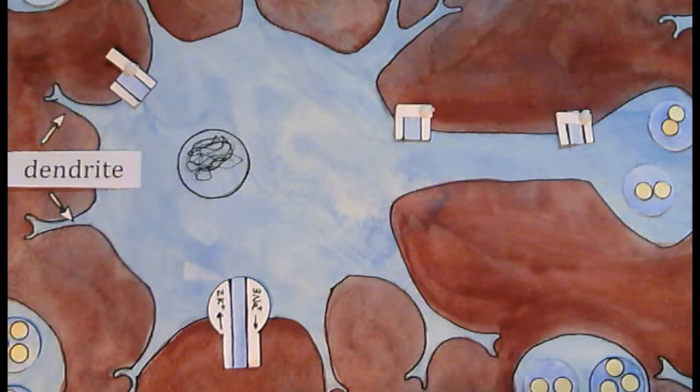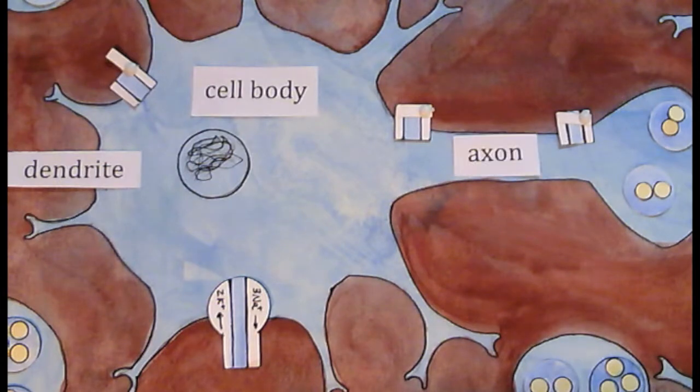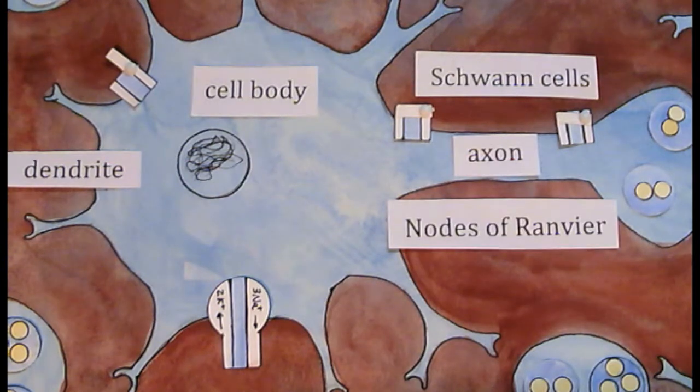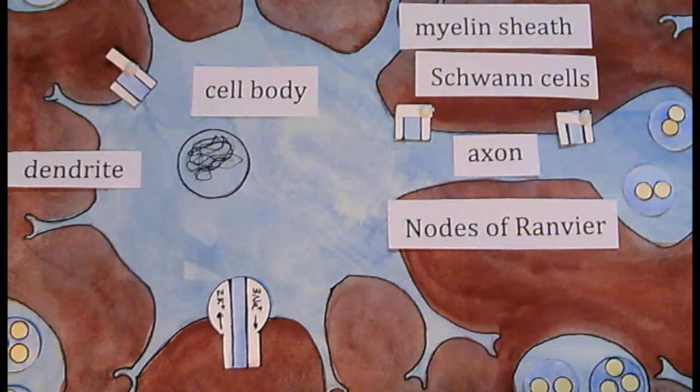These are dendrites. This is the cell body. This is the axon, which is made of Schwann cells, in between which are nodes of Ranvier. A myelin sheath covers the Schwann cells of the axon.